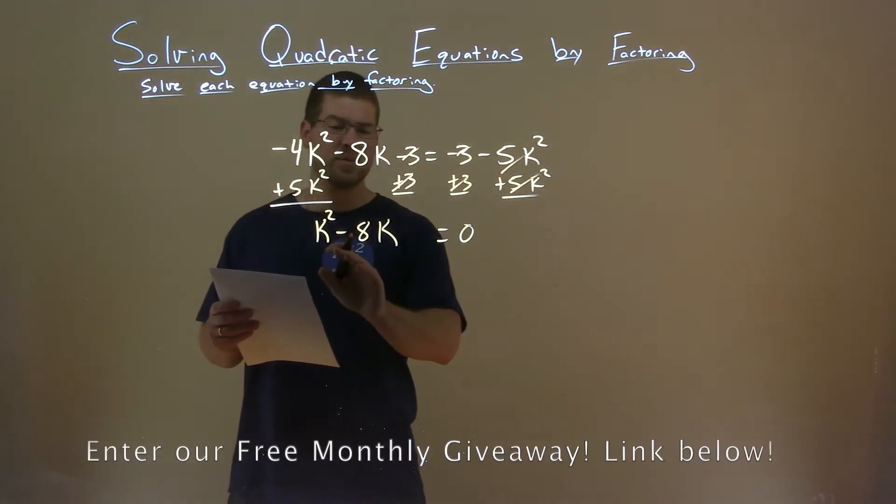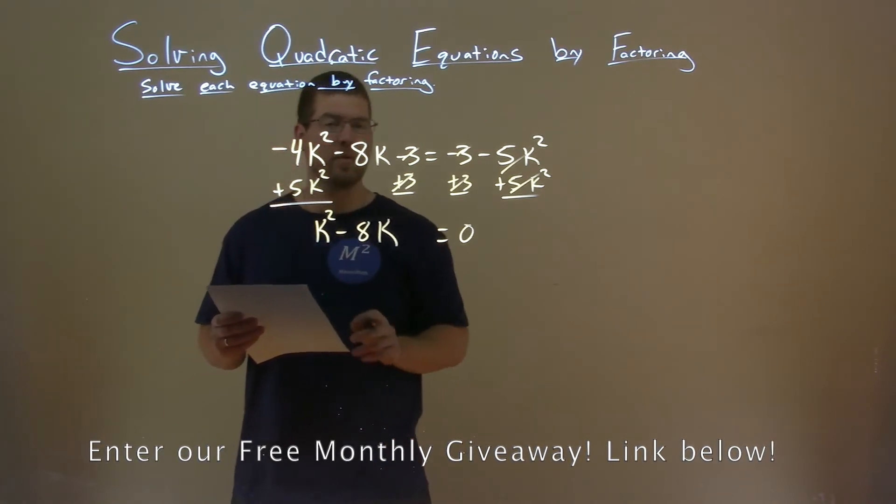All these cancel. So actually we're left with something fairly easy. K squared minus 8k equals 0.